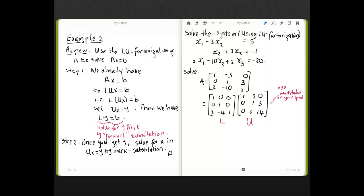What we do in step one is solve for Y using forward substitution. Once you get Y, what you do now is you go back to this equation, UX equals Y and solve for X by backward substitution. Let's implement that strategy with this example.